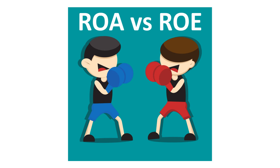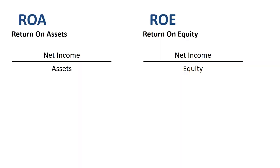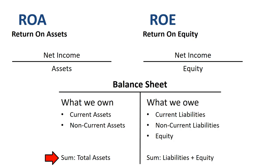In the blue corner ROA, in the red corner ROE. The similarity between return on assets and return on equity is that both have net income in the numerator. The difference is in the denominator: assets versus equity. Assets is the sum of what a company owns. Equity is the book value of shareholder capital, a subset of what a company owes on the right-hand side of the balance sheet. Since liabilities are for most companies a sizable number, equity should be lower than assets — therefore, return on equity should be higher than return on assets.